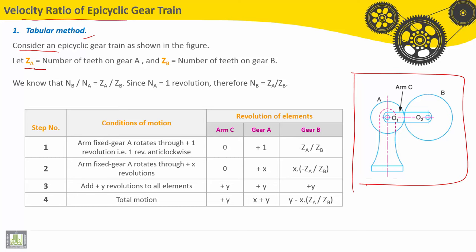So ZA, this is the number of teeth in gear A. ZB is the number of teeth on gear B. We know that NB divided by NA is equal to ZA divided by ZB.